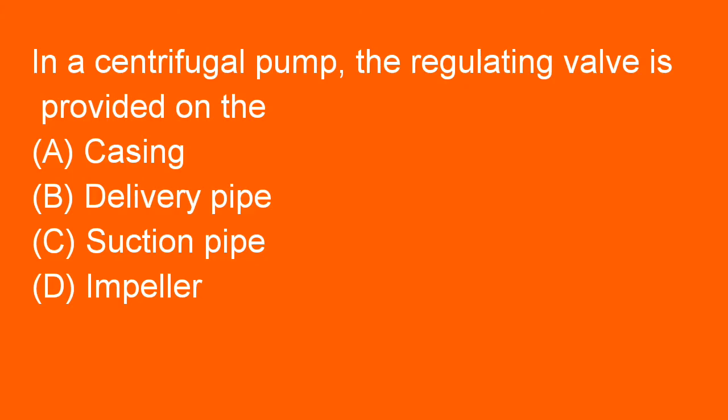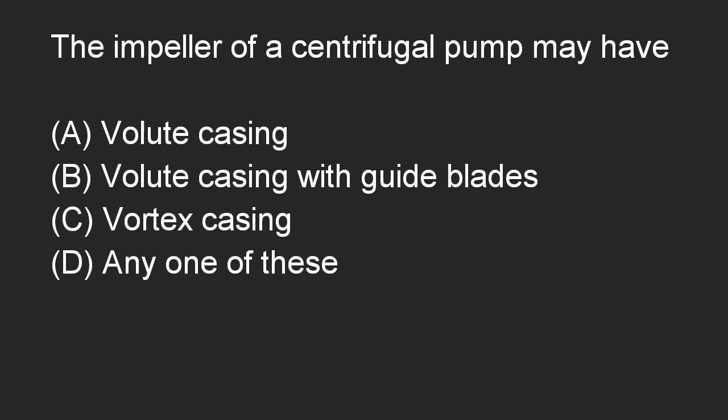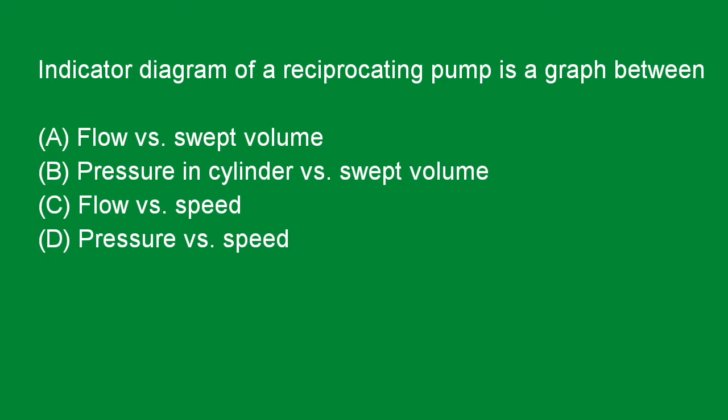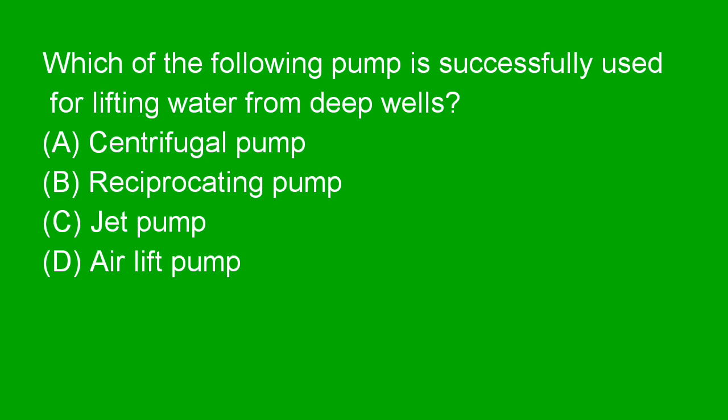Next question: In a centrifugal pump, the regulating valve is provided on the delivery pipe. Option B is right. Next question: The impeller of a centrifugal pump may have volute casing, volute casing with guide blades, and vortex casing. Option D — any of these — is right. Next question: Indicator diagram of a reciprocating pump is a graph between pressure in the cylinder versus swept volume. Option B is right. Next question: Which pump is successfully used for lifting water from a deep well? Air lift pump is used. Answer D is right.